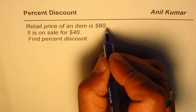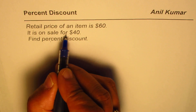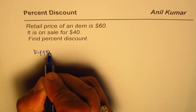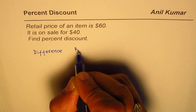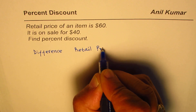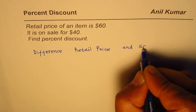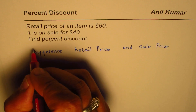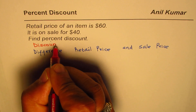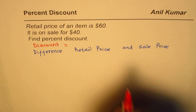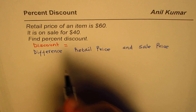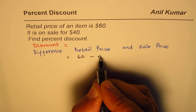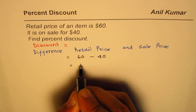We know the retail price and the sale price. The difference of retail price and sale price is what we call the discount. Discount is equal to retail price minus sale price. In our case, retail price is sixty dollars and sale price is forty dollars, so sixty minus forty gives us twenty dollars.